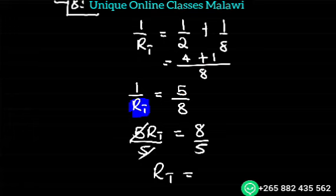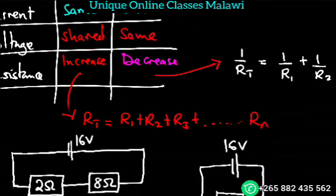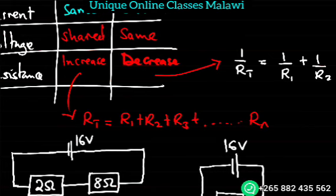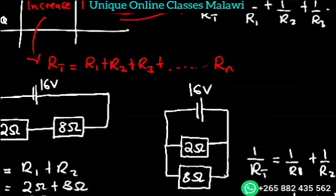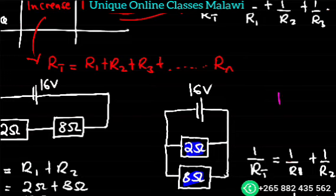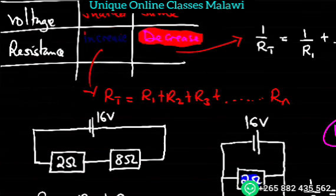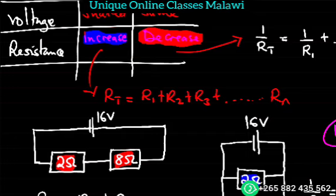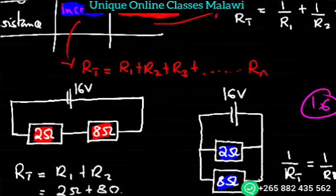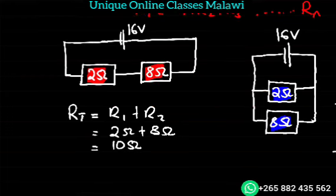So R_T equals 8 divided by 5, and the answer is 1.6 ohms. So we have 1.6 ohms total resistance. You can see that in parallel, compared to the individual resistances of 2 ohms and 8 ohms, the total resistance decreases. It will always be less than the smallest individual resistance.